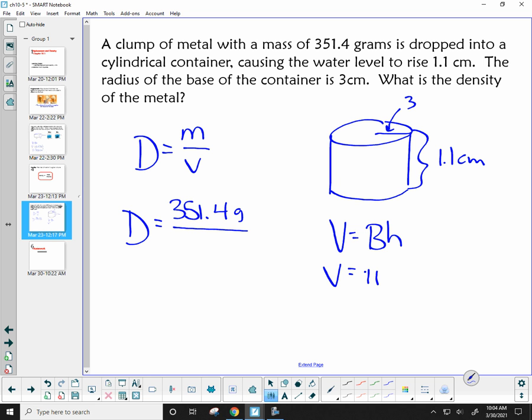Pi times my radius squared, times the height, which is 1.1. So my volume gives me 3 squared is 9. 9 times 1.1 is 9.9 pi. So 9.9 pi cubic centimeters.